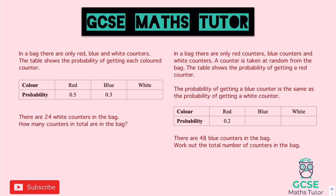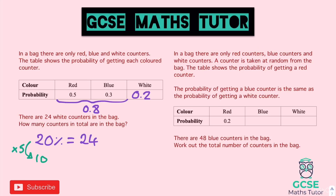For the first practice reverse percentage question: red is 0.5, blue is 0.3, so white is 0.2 or 20%. There are 24 white counters, so 20% = 24. Since 20 × 5 = 100, we multiply both sides by 5: 24 × 5 = 120. There are 120 counters in the bag.